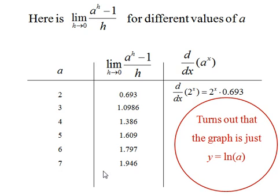So, hopefully you noticed that graph was increasing and concave down. It turns out it's just the graph of ln of a. It's the natural log of the base. So actually that constant is just the ln of whatever the base is.